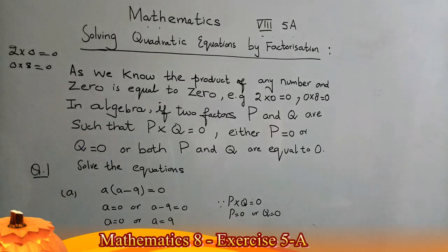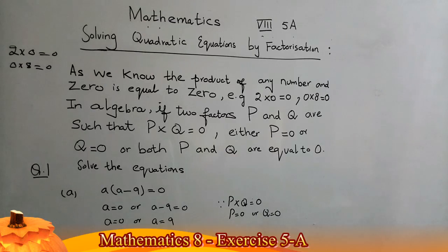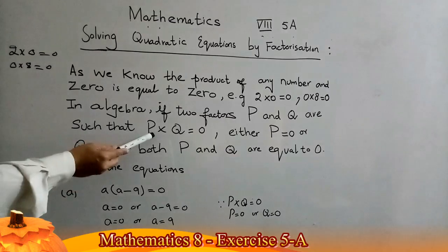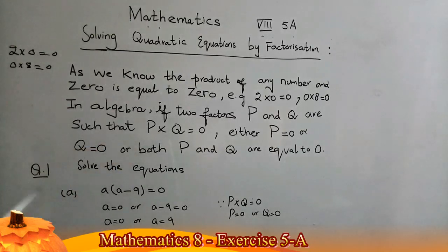In algebra, if two factors p and q are such that p × q = 0, then either p = 0, or q = 0, or both p and q are equal to zero. We shall use this principle to solve quadratic equations of standard form.